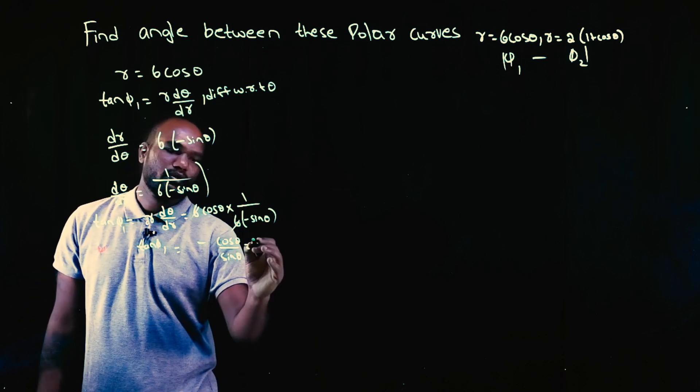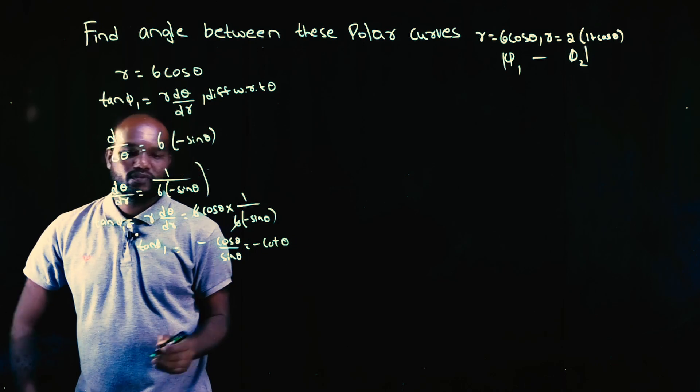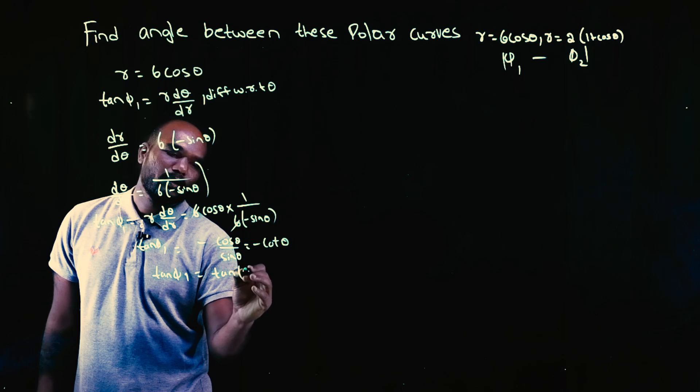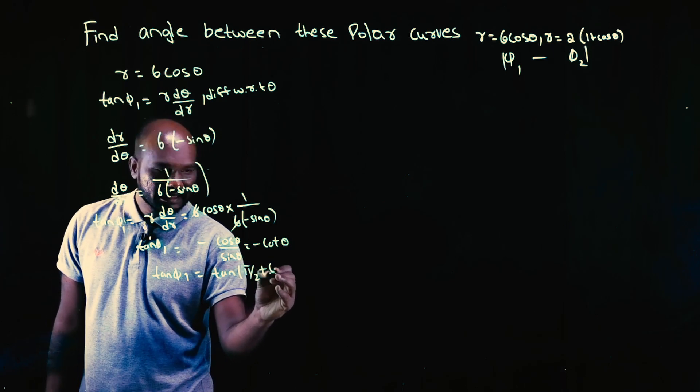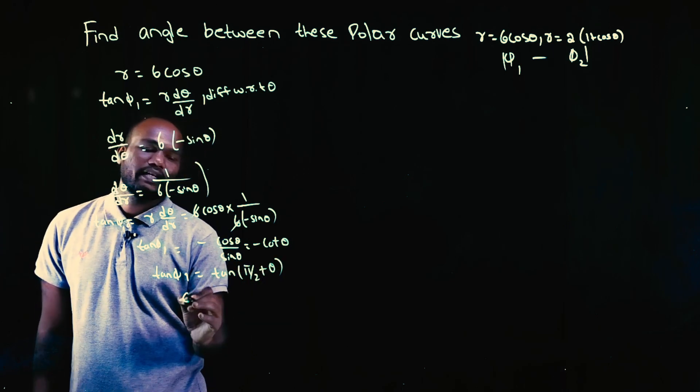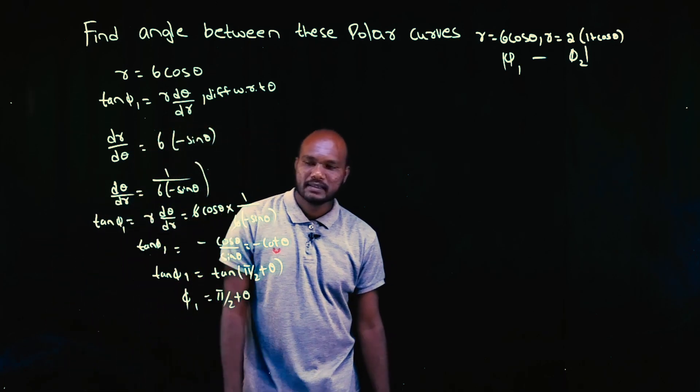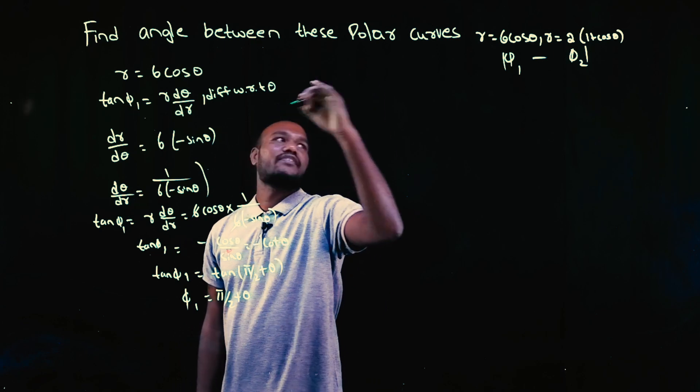This is minus cot θ. How to find the value? Tan φ1 is equal to tan of π/2 plus θ. So, tan φ1 we can take it out. φ1 is equal to what? π/2 plus θ. This is the first curve.